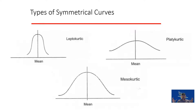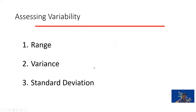A leptokurtic curve has very few scores at the edges, with most scores clustered very close to the mean and very little variability. A platykurtic curve has more variability because the distribution is wider and fewer scores are close to the mean. We have three statistical tools to assess variability: range, variance, and standard deviation.